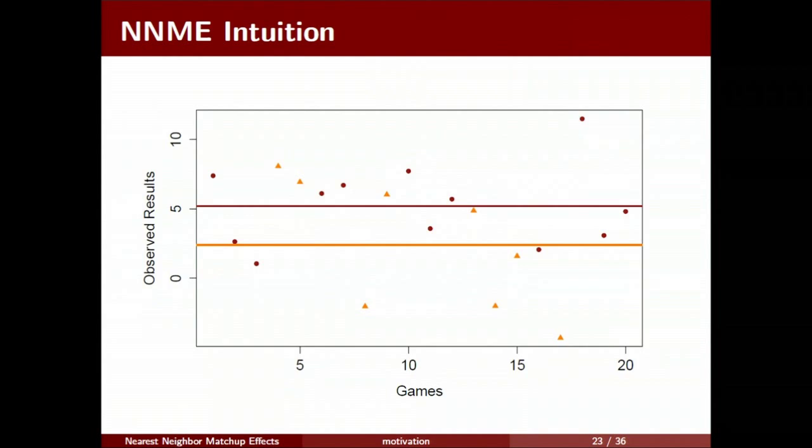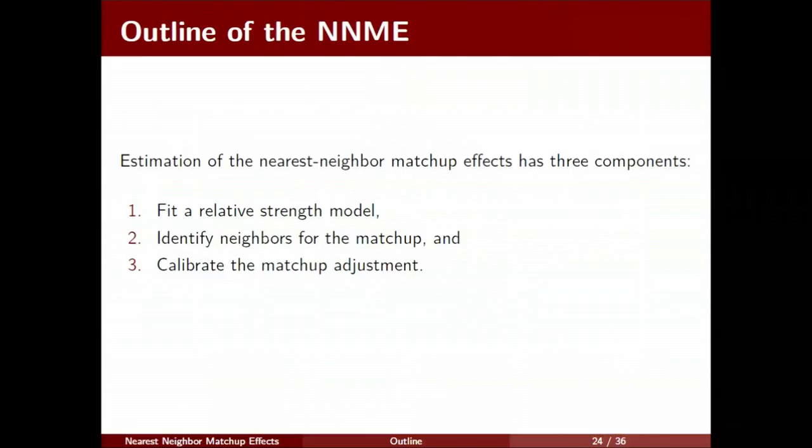The way that we're actually going to fit this model is there's three real components. The first piece is to fit that relative strength model that I talked about. That gives us a way to measure how well they're performing against expectations. And then given that, we're going to look for teams that are similar for a given matchup. So imagine that Harvard and Yale are playing basketball tomorrow. If we wanted to perform our model on this particular matchup, we look at everyone that Harvard's played in the past that's similar to Yale in some sense and see how well they performed. If they performed, say, 10 or 15 points better than expected against teams like Yale, it's reasonable to assume they would also perform better than expected against Yale. So that's the idea with our framework. Part two is how do we actually identify neighbors that are similar to a team like Yale? And calibrating the matchup adjustment is a way to estimate how much of that improved performance is passed forward in the next phase.